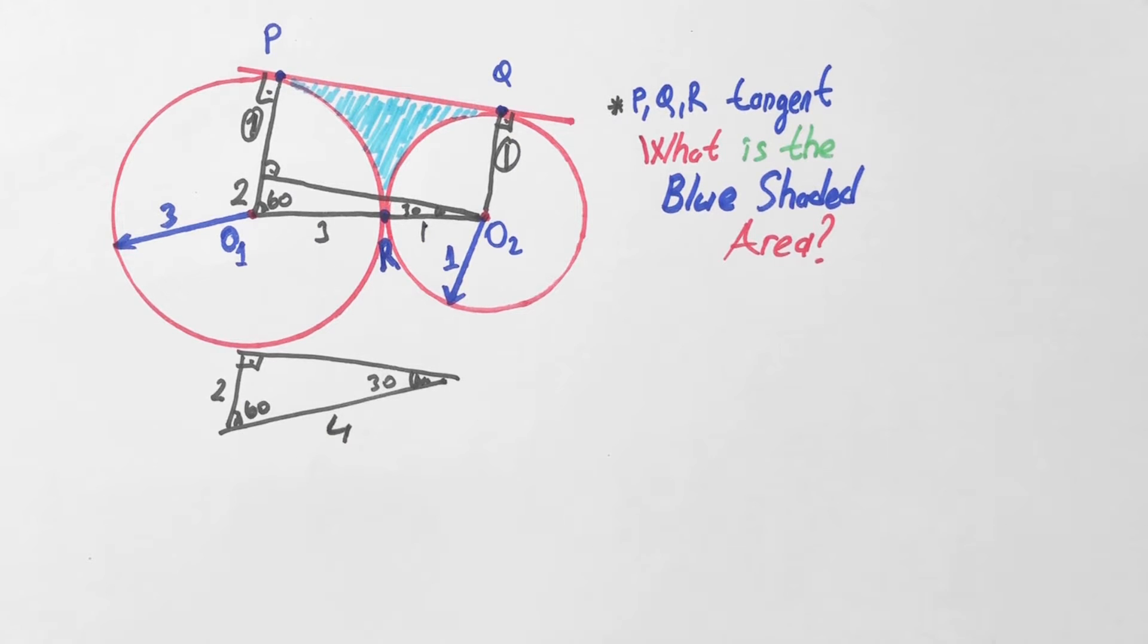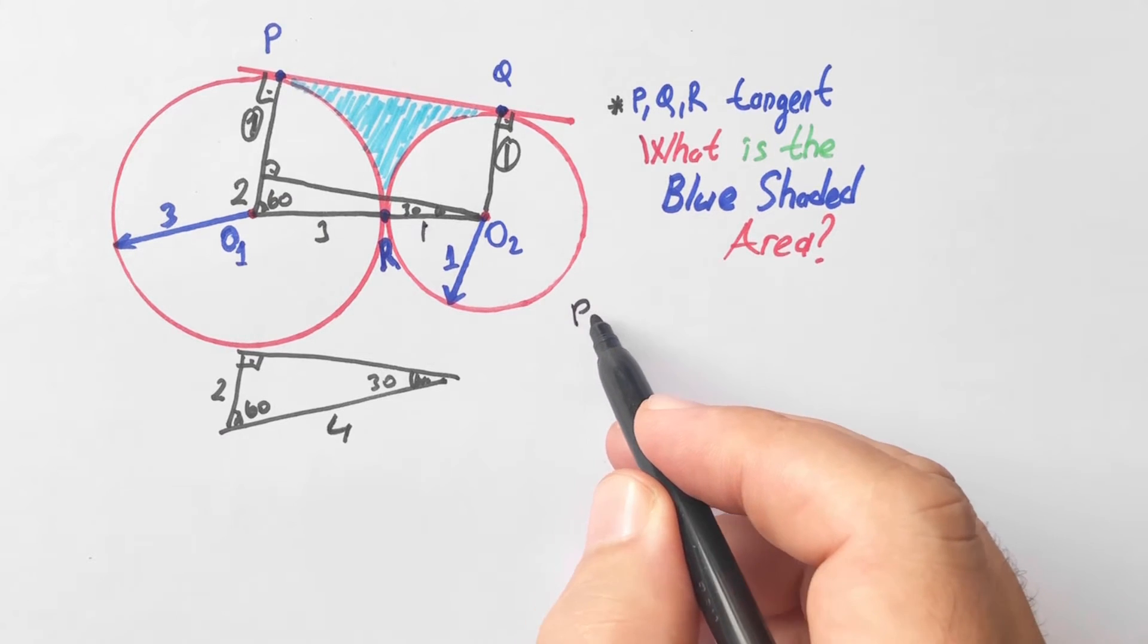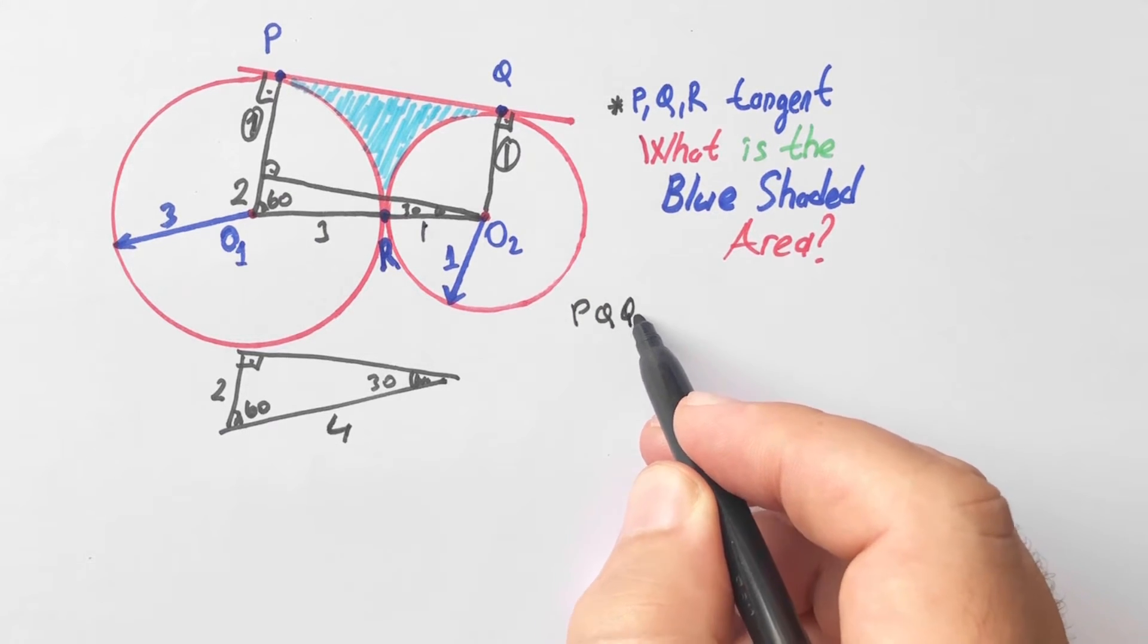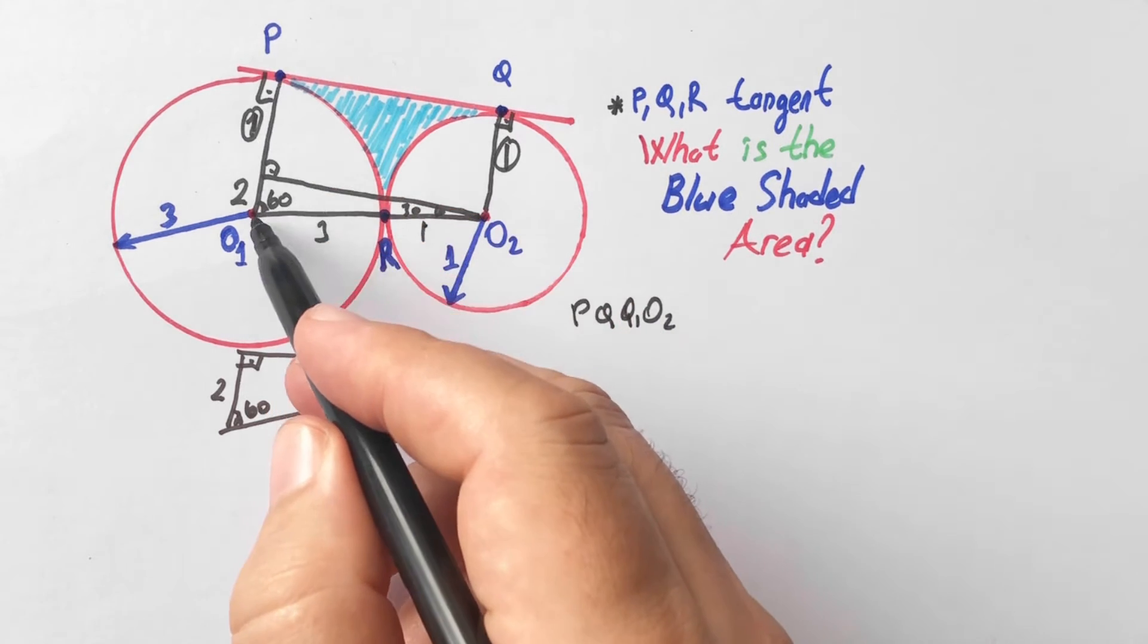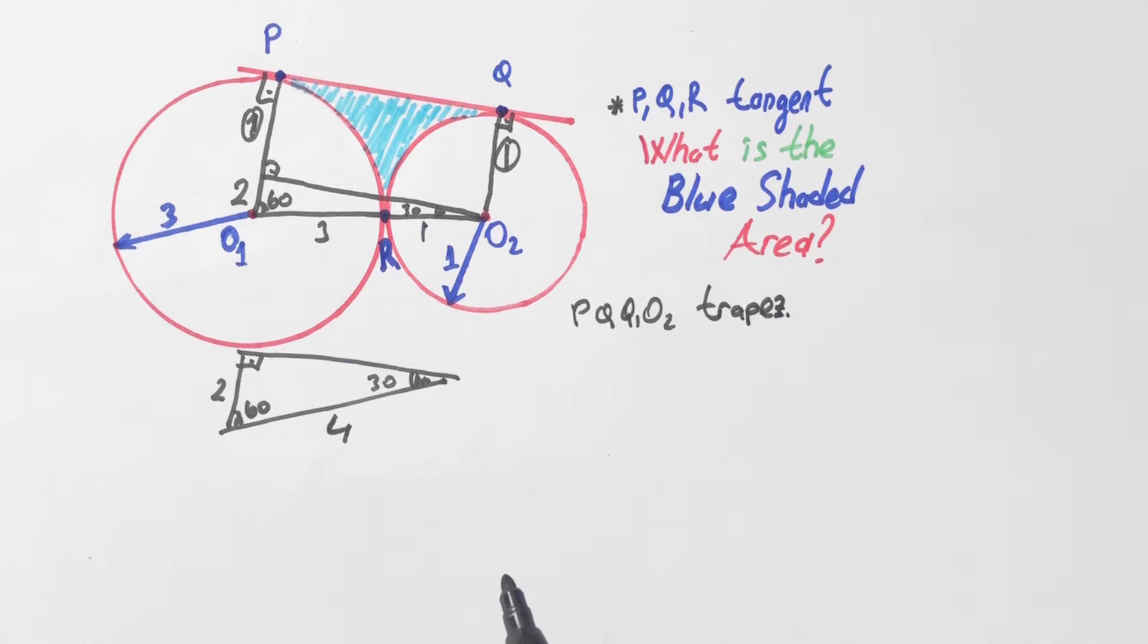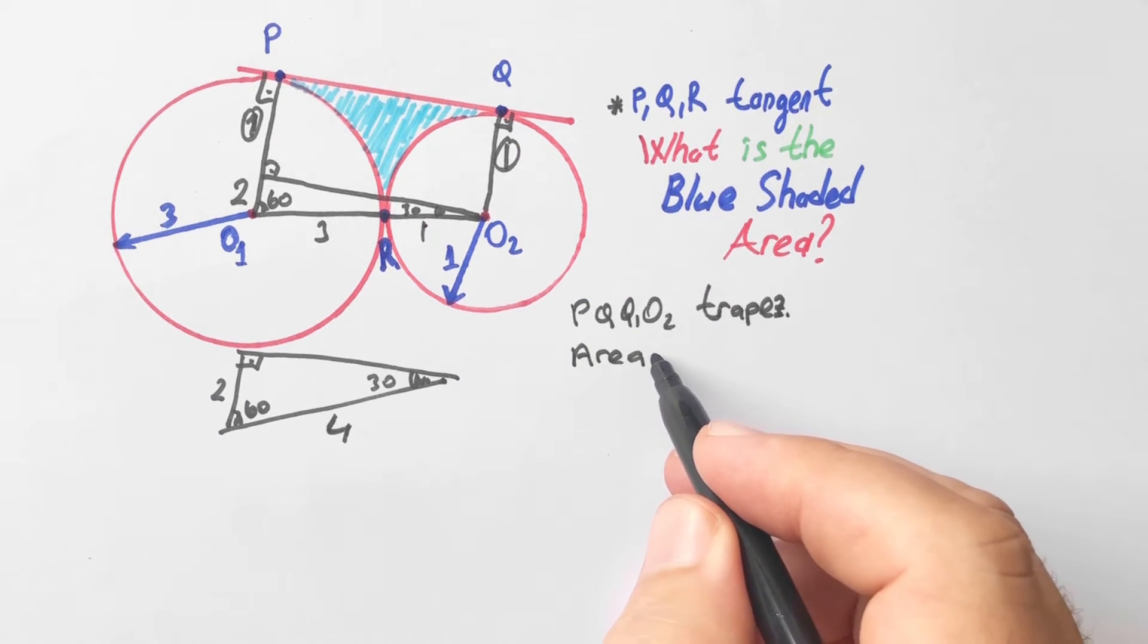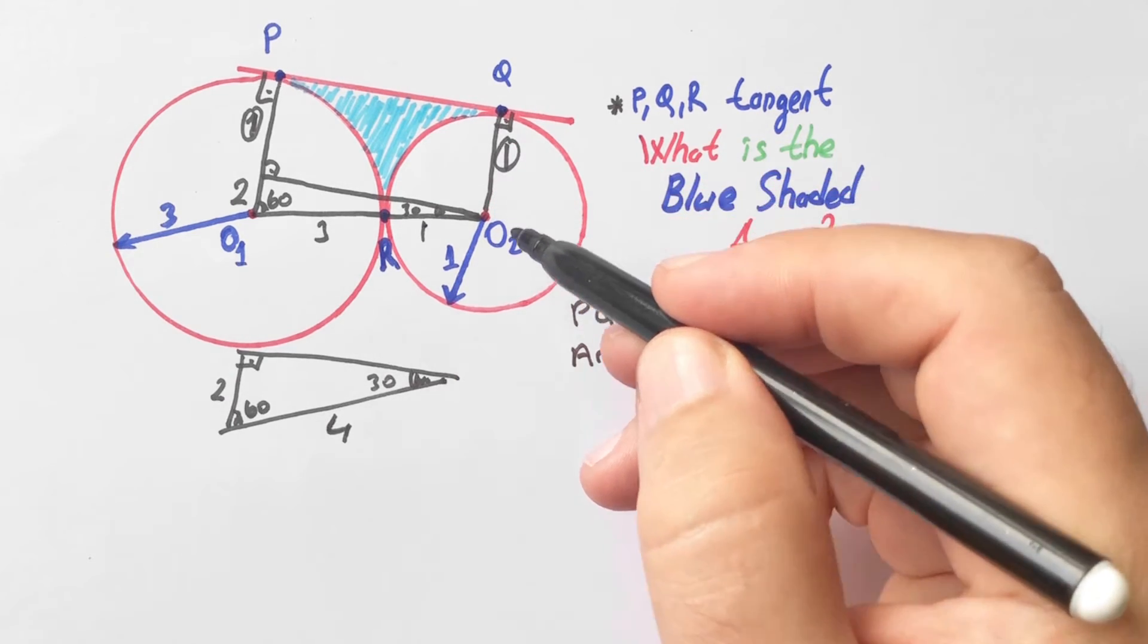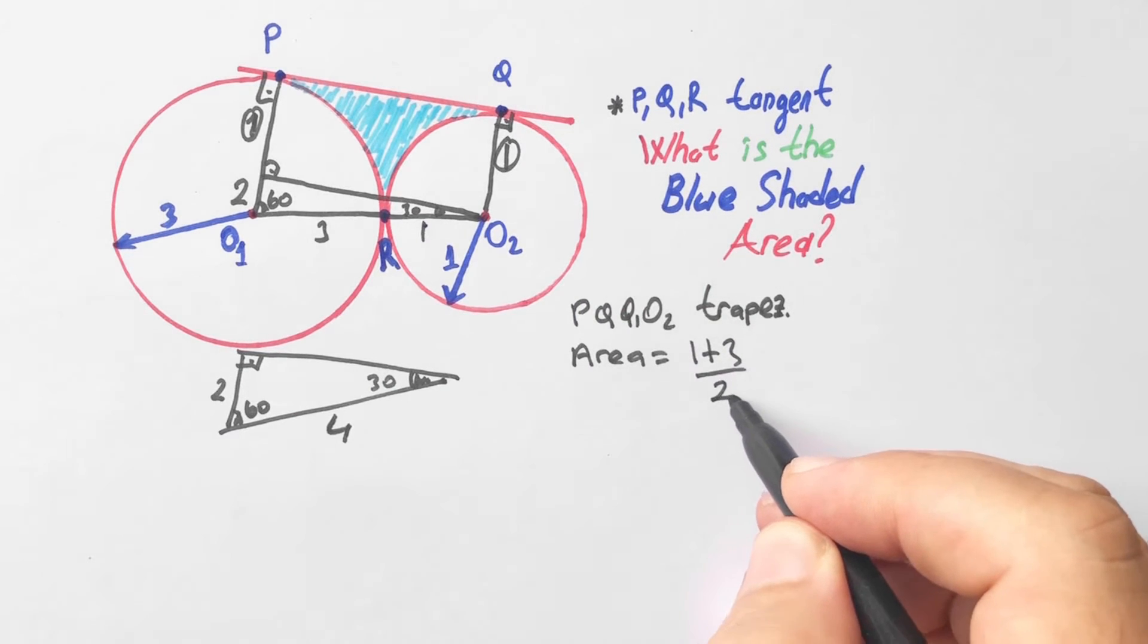And if you notice that P, Q, O₁, O₂ is a trapezoid.